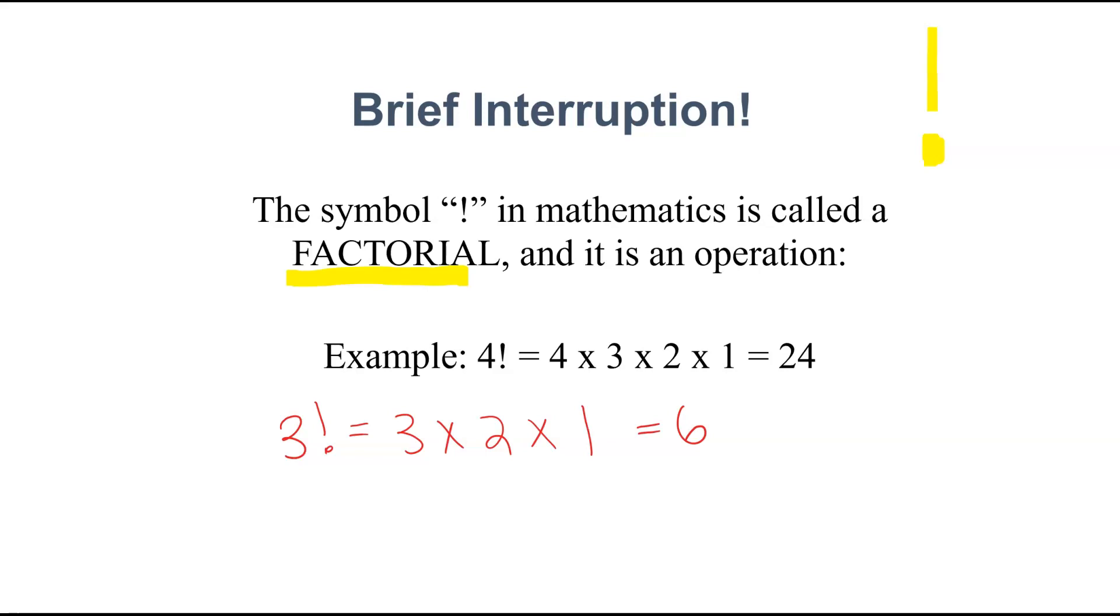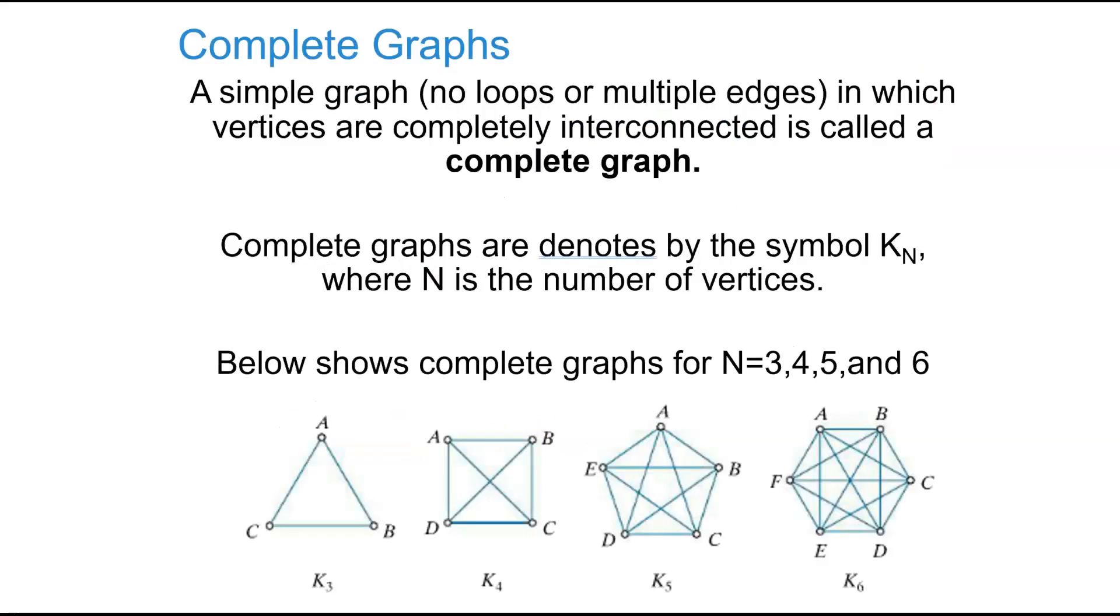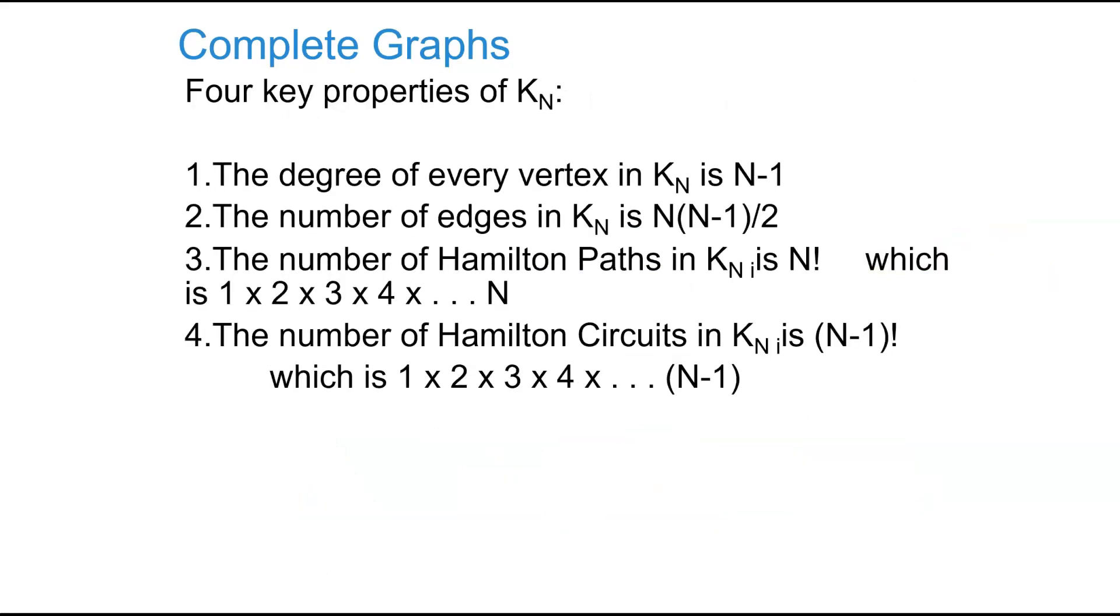We use the factorial in figuring out the Hamilton circuit. So a simple graph, no loops or multiple edges in which vertices are completely interconnected, is a complete graph. Complete graphs are denoted by the symbol K sub N. And N is the number of vertices. So we've got these complete graphs here. They close, there's no loops, multiple edges. So for a complete graph, the degree of every vertex is N minus 1. The number of edges is this formula.